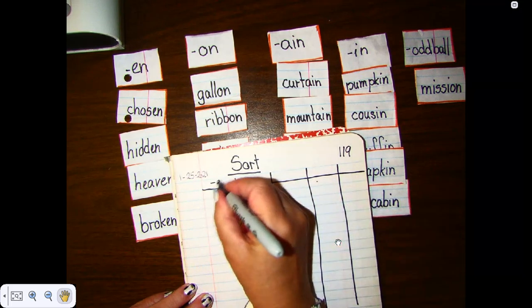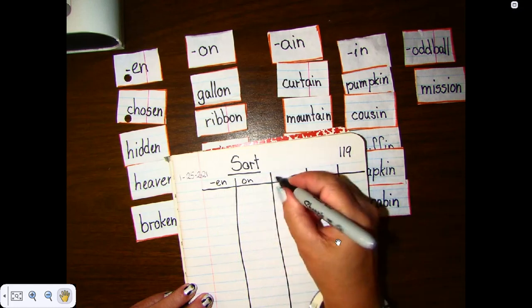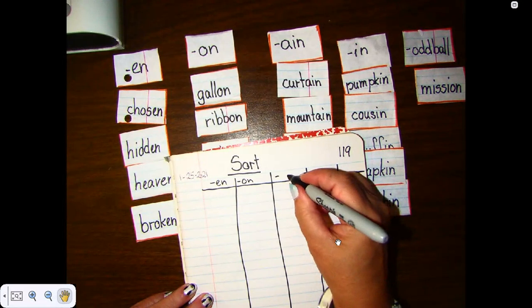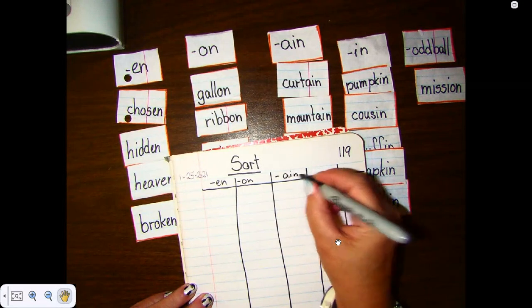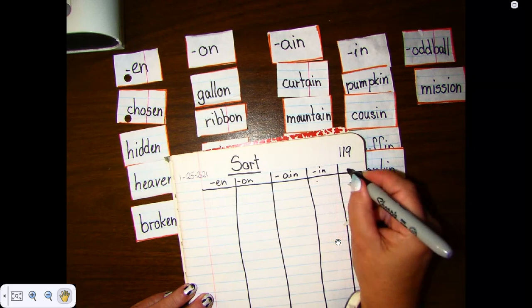And I'm going to write E-N-O-N. And a little hyphen up front. That means the word comes first. And this is at the end. A-I-N and I-N and our oddball.